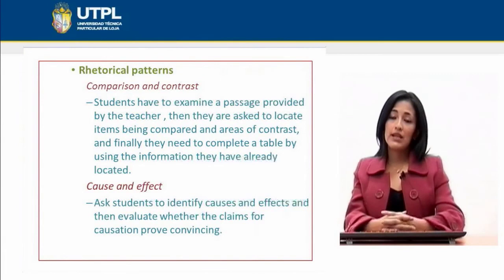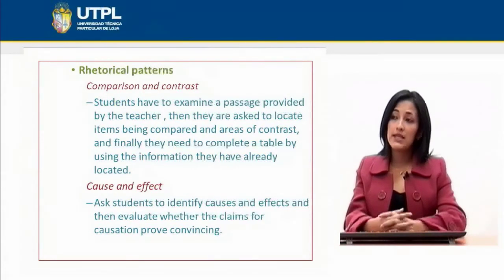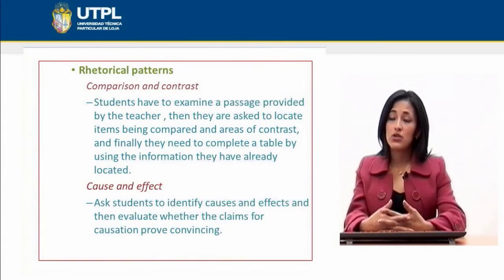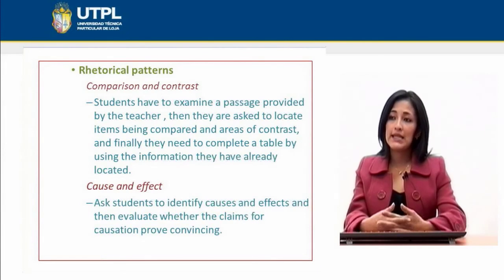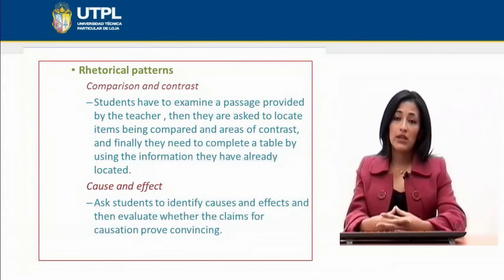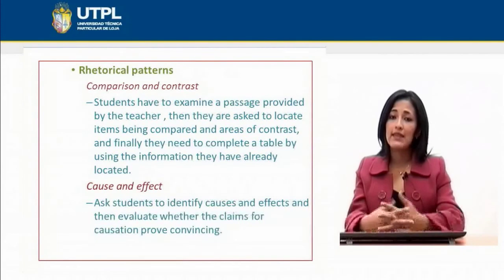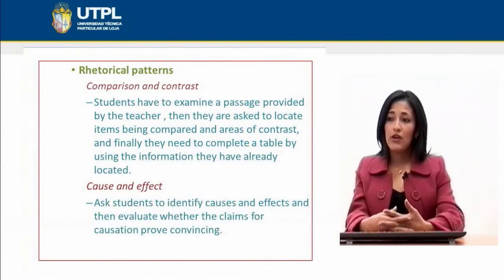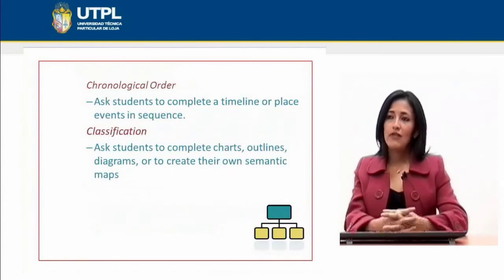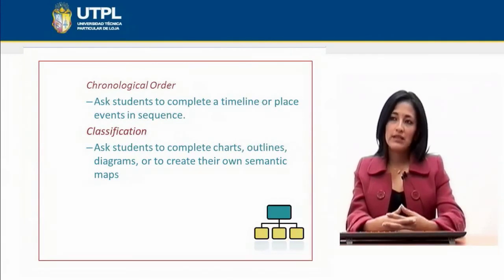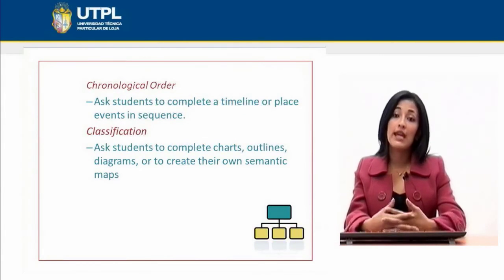In the case of rhetorical patterns — for comparison and contrast — students examine a passage provided by the teacher and are asked to locate items being compared and areas of contrast, then complete a table using the information they have located. For cause and effect, we can ask students to identify causes and effects and evaluate whether the claims for causation prove convincing. For chronological order, we can ask students to complete a timeline or place events in sequence. For classification, we can ask students to complete charts, outlines, diagrams, or to create their own semantic maps.